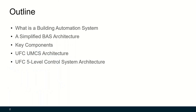First, I'm going to talk about what is a building automation system, a simplified building automation system architecture and its key components, followed by DoD-specific building automation system architecture called UMCS architecture and a UFC five-level control system architecture.